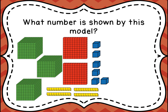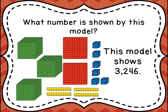What number is shown by this model? We're going to count: we have three of the thousands, two of the hundreds, four of the tens, and six of the ones. So this model shows three thousand two hundred forty-six.